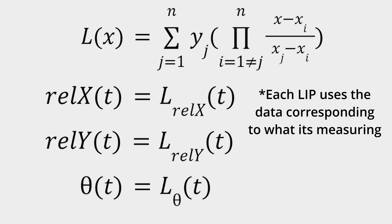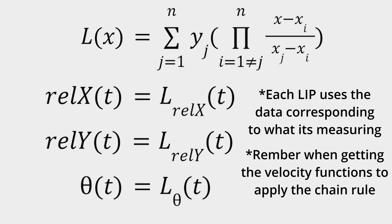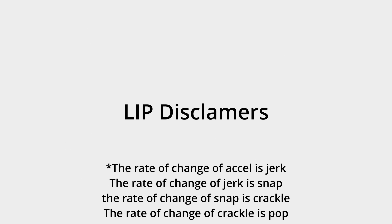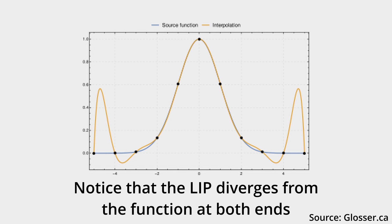Great, we have successfully found the coefficients for determining our theta of t, rel x of t, and rel y of t. Before you get too excited and start doing constant snap, crackle, and pop odometry, there are a few disclaimers I need to make. Firstly, when you make too high an order of an LIP, you can get what is called Runge's phenomenon. This is basically when your LIP explodes. You can imagine that this would be bad for our odometry. We don't want a robot to randomly teleport away from where it should be.